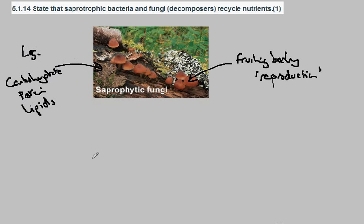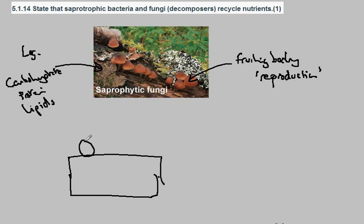If we illustrate the log by this block in the diagram, what happens is that the saprophytic fungi lands initially on the wood as a spore — a single cell — and it will secrete digestive enzymes. Yellow represents digestive enzymes and these bring about the digestion of the wood.